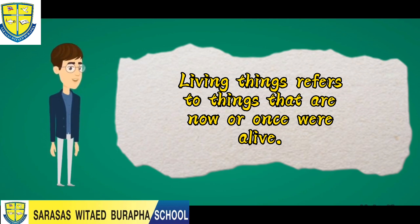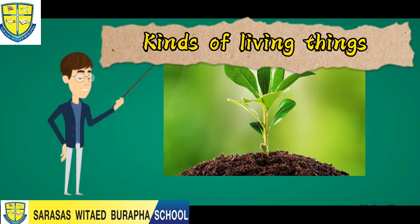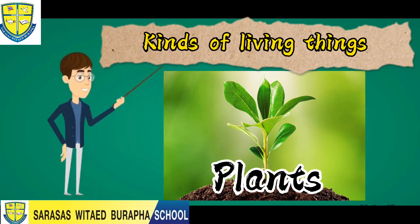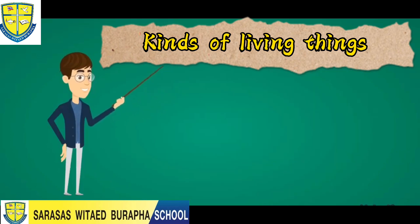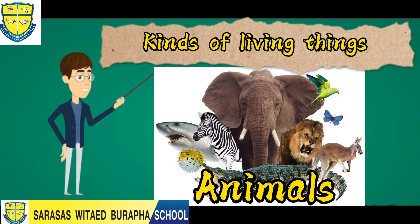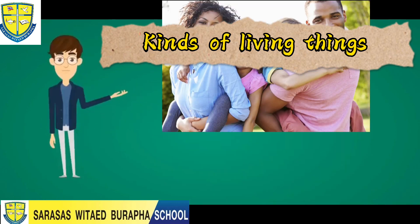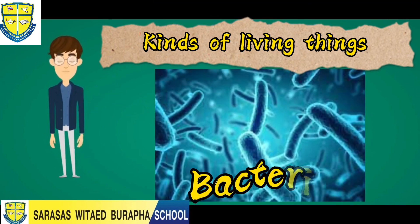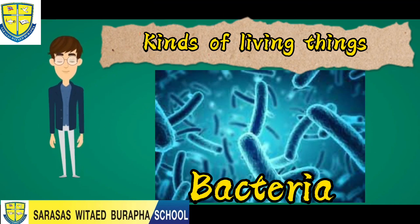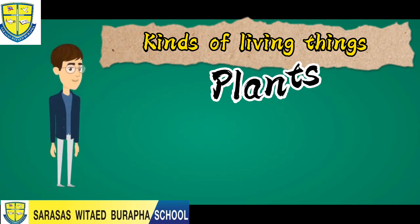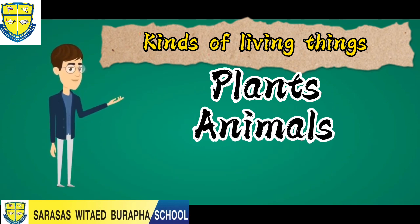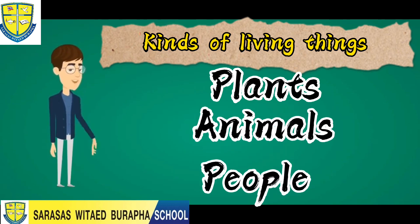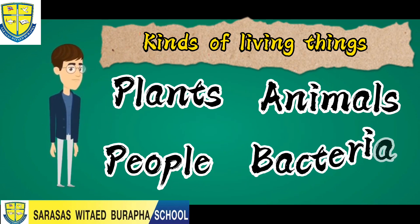To understand more about living things, I will show you the different kinds of living things. Our first kind of living things are plants. Next on the list are animals. We also have people. And even bacteria is a living thing.